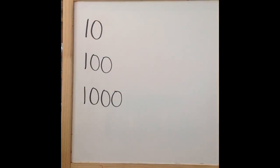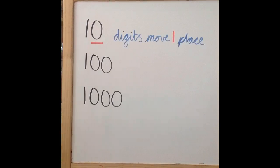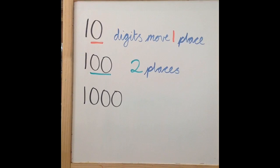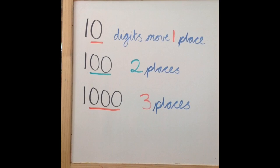Look at what number you've been asked to multiply or divide by. When multiplying or dividing by 10, the digits move 1 place, as 10 has one zero. When multiplying or dividing by 100, your digits must move 2 places, as 100 has two zeros. And finally, when multiplying or dividing by 1000, your digits must move 3 places, as 1000 has three zeros.